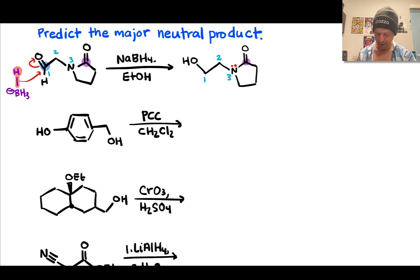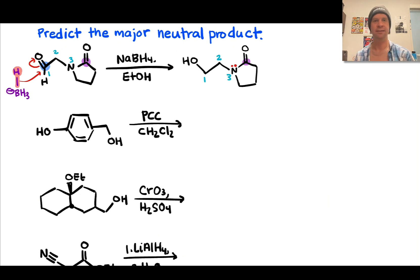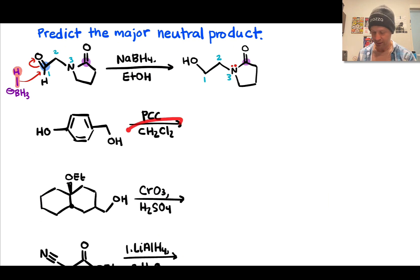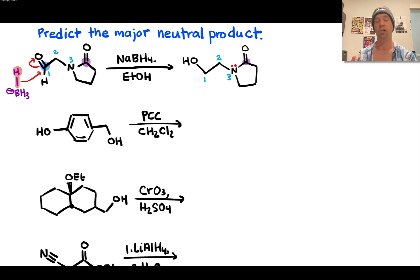In the second case, we have pyridinium chlorochromate (PCC), an oxidizing agent in the family of chromium-based oxidants. What makes PCC unique is that no chromic acid forms and the conditions are anhydrous — no water. We use PCC in a dry organic solvent like methylene chloride. This prevents oxidation of an intermediate aldehyde up to a carboxylic acid, so we can take a primary alcohol and oxidize it to an aldehyde, stopping at that stage without over-oxidation.